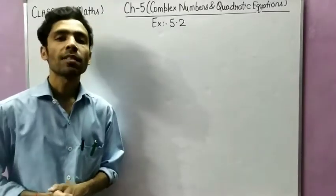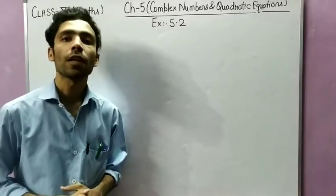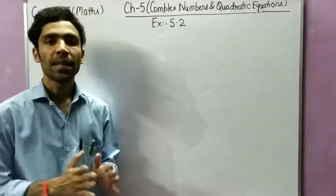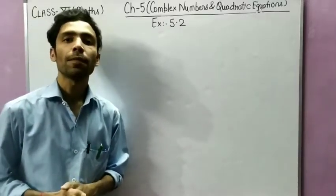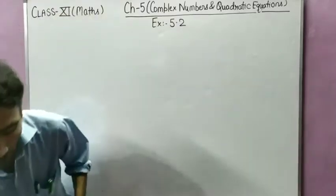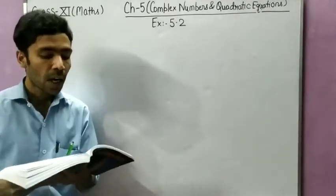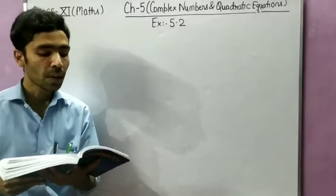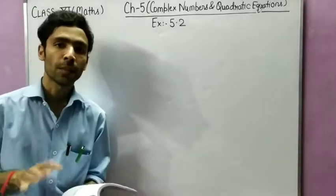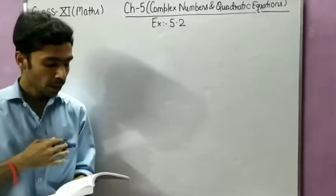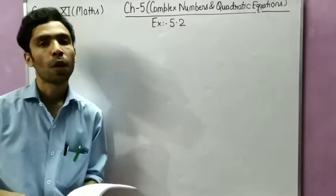Hello students. In the previous part of the video we discussed the topic of Argand plane and the polar representation of a complex number, and based upon that topic I solved one example. In today's video we will solve Exercise 5.2 from NCERT. The first question asks us to find the modulus and the argument of each of the following complex numbers from question number 1 to question number 2.